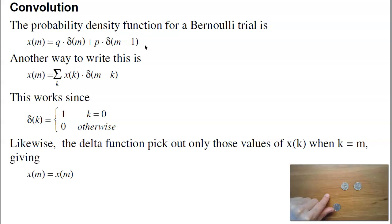One way to see that is convolution. The probability density function for a Bernoulli trial is just q times delta of m plus p times delta m minus one. Another way to write that is the sum of k, x sub k, this guy right here, times delta of m minus k. This works because this is zero anywhere except when this quantity is zero. It's going to pull off when k equals zero, or when m equals zero. k has to be zero, so you get x of zero. x of zero is x of zero. When m equals one, this is only true when k equals one, so pull off x of one. x of one is x of one, and so on. So it seems kind of like a silly way of writing x of m.